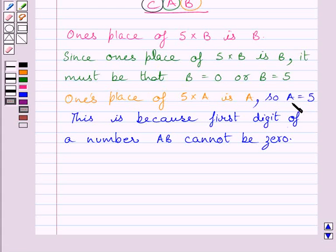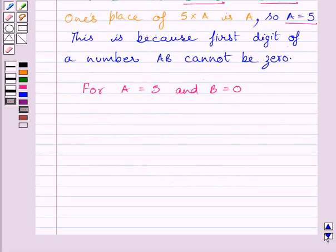Now, we get the value of A as 5. And, possible values of B are 0 and 5. Now, let us consider the first possibility, that is, A is equal to 5 and B is equal to 0. For A is equal to 5 and B equal to 0, we get 50 multiplied by 5 as 250.